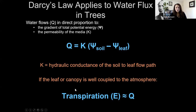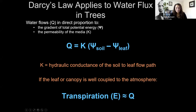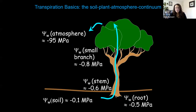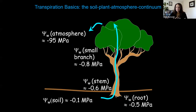If the tree is well coupled to the atmosphere — which most coniferous forests are — then our transpiration rate is generally equal to Q as derived by Darcy's law. When we talk about the driving force in terms of water potential, we're dealing with negative pressures. It's when water is under positive pressure that it really has the ability to do work, like in heavy machinery. But in trees, water is actually under tension, like a rubber band.